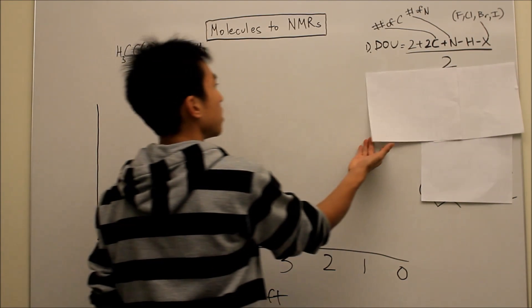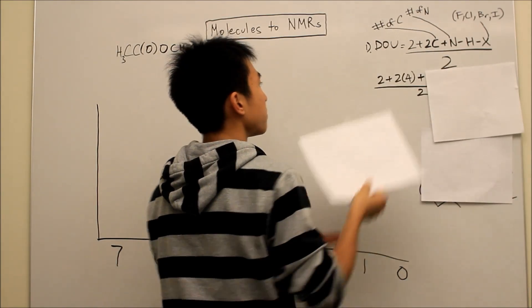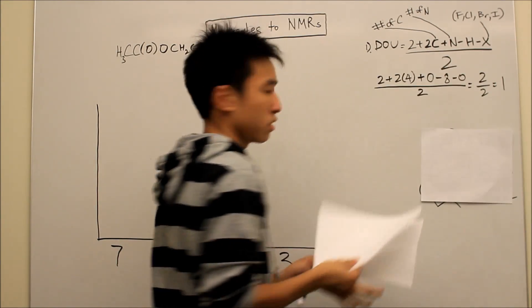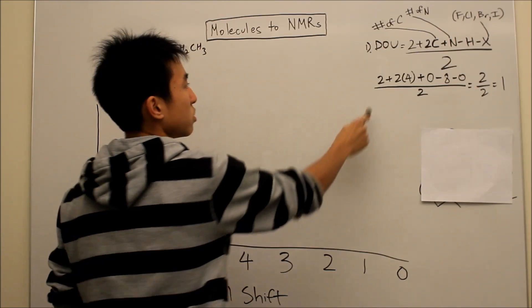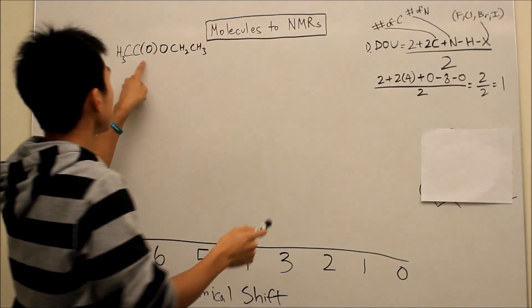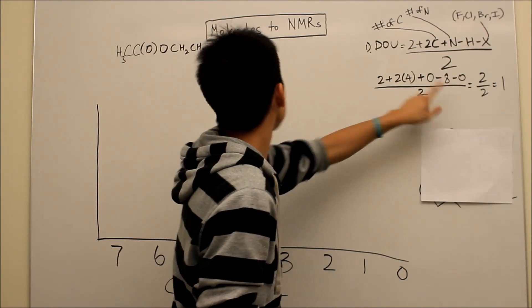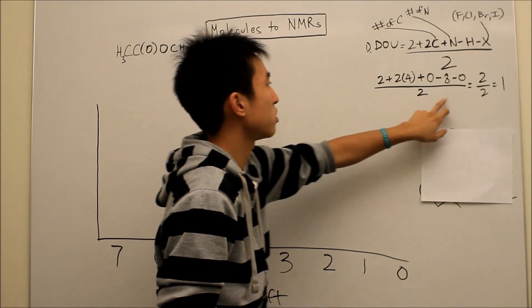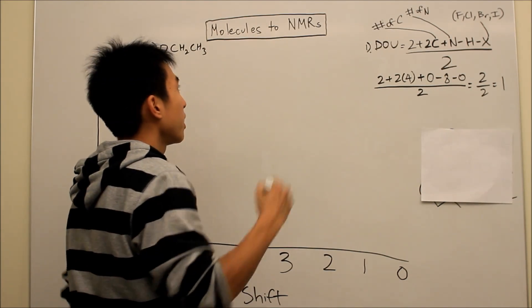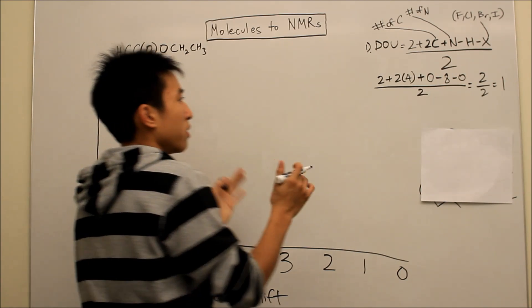plus the number of nitrogens minus the number of hydrogens minus the number of halides in our molecule, represented by X. And halides are just fluorine, chlorine, bromine, iodine. Okay, so pause the video, try this out, and tell me what you get. Okay, so hopefully you guys got this. 2 plus 2 times 4, because there's 1, 2, 3, 4 carbons, 0 nitrogens, 8 hydrogens, if you add it up, divide by 2, you should get 1 degree of unsat, right?